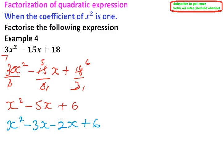We factor out what is common in our terms. So x squared and 3x, x is common, so we have x outside the bracket, we are left with x minus 3.